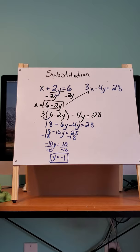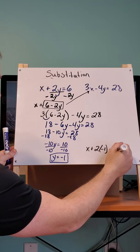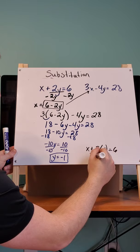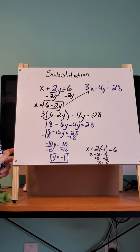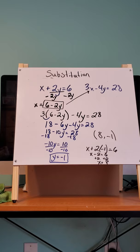And now that we have y is negative 1, you just have to plug it into either of the first two equations to get our x. So I'm going to plug it in to the first one and get x plus 2 times negative 1. x minus 2 equals 6 plus 2. And get x equals 8. And then what we would have is 8, negative 1 would be the point where these two lines would cross, and that's our solution for them.